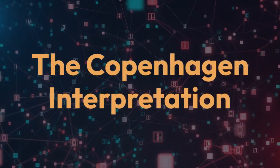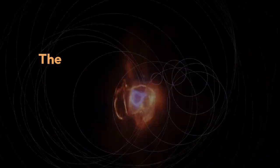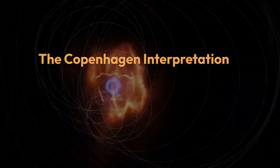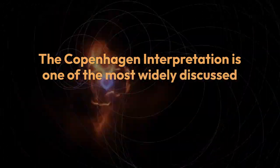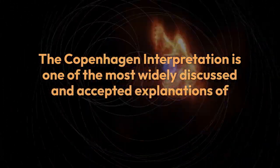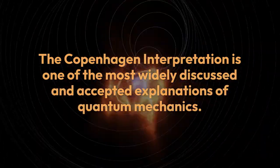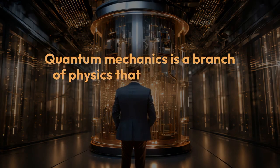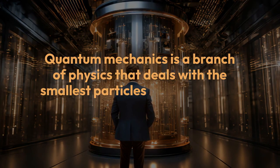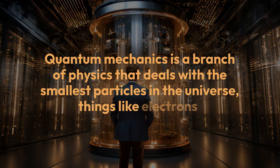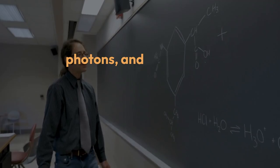The Copenhagen Interpretation is one of the most widely discussed and accepted explanations of quantum mechanics. Quantum mechanics is a branch of physics that deals with the smallest particles in the universe, things like electrons, photons, and atoms.